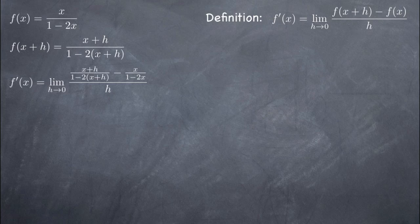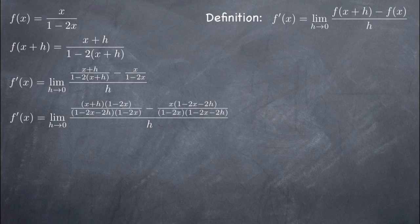Now we need to start simplifying. The simplification process will be different depending on the original function. In this case, we have to find a common denominator in the numerator of our function. Eventually, once we've fully simplified, we'll take the limit as h goes to 0.